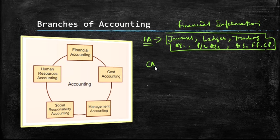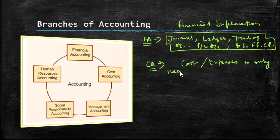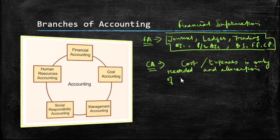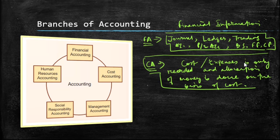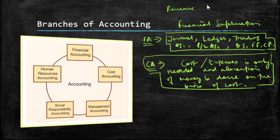Coming to cost accounting, it refers to that section of accounting where cost and expenses are recorded, and allocation is done on the basis of cost information to various departments. Cost accounting is mainly focused on manufacturing concerns — it is not applicable to trading concerns, whereas financial accounting is applicable to all concerns, whether trading, manufacturing, or production.